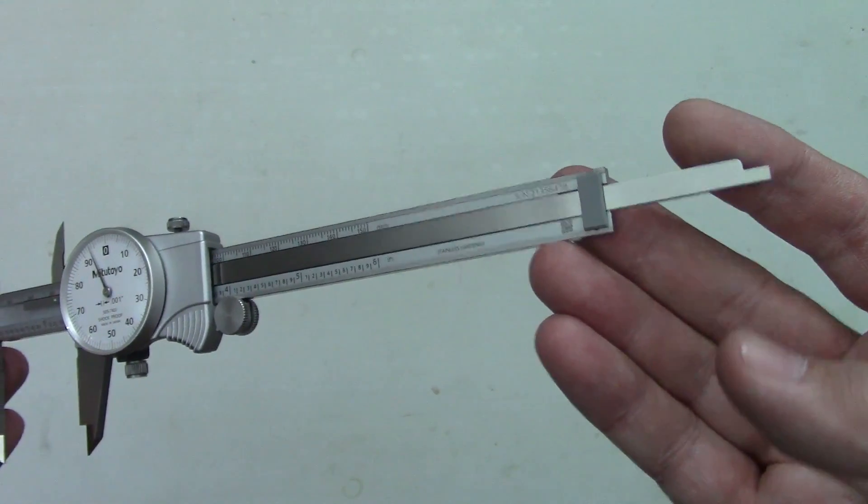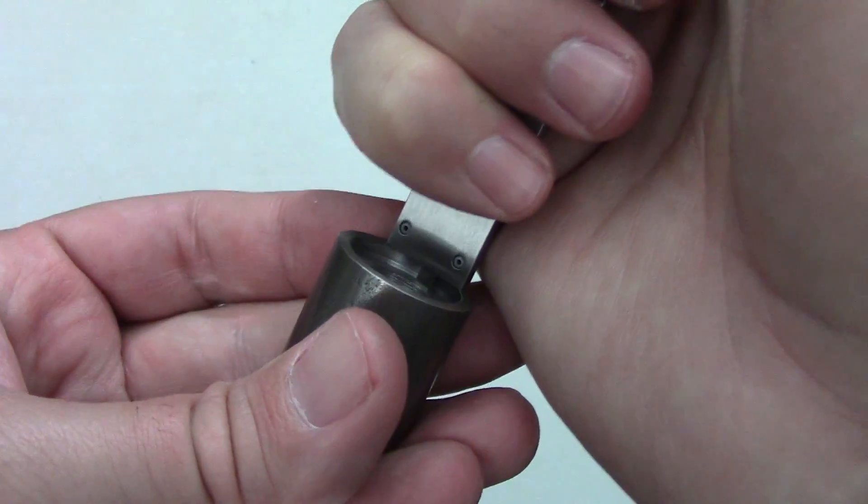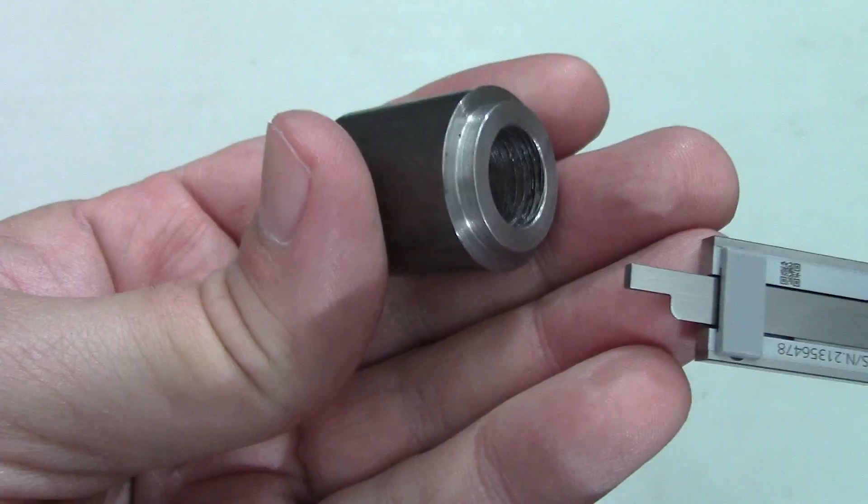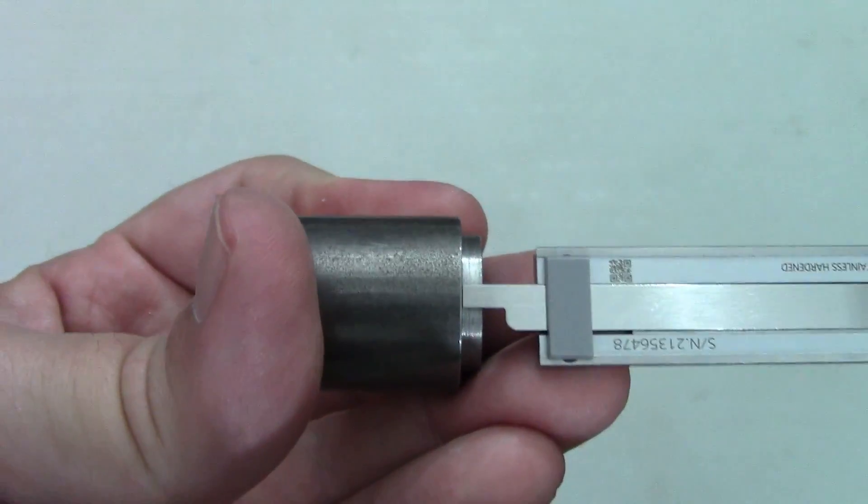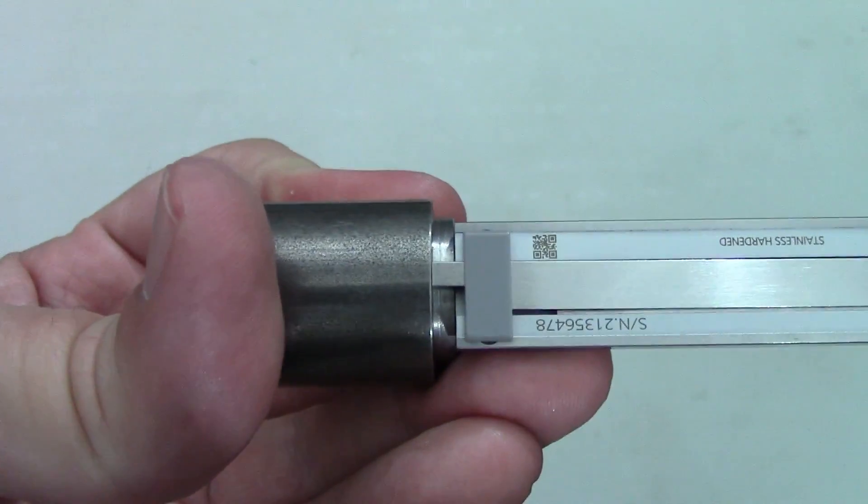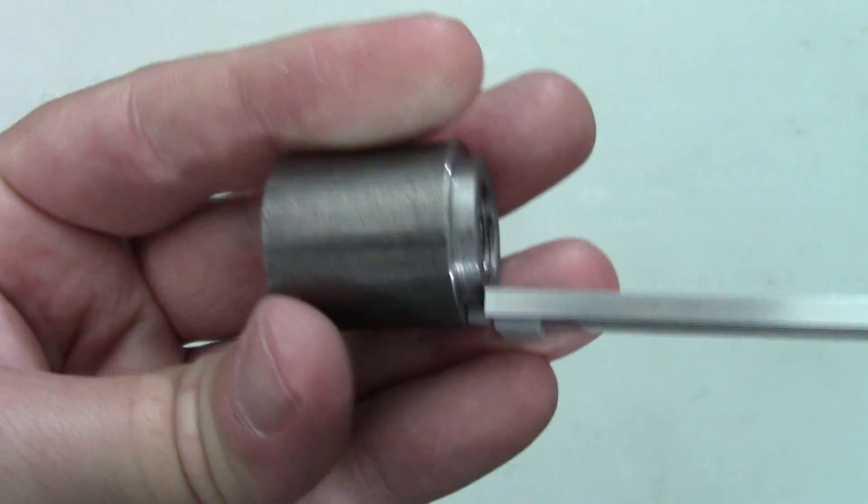Moving on, we have the depth rod at the end of the calipers. This is used for getting depth measurements on holes and other features. It can also be used to measure the lengths of steps like this one, but it's not particularly stable in this orientation because it doesn't have much of a footprint at all on the part. It's free to tip in all directions which will definitely affect your measurement.